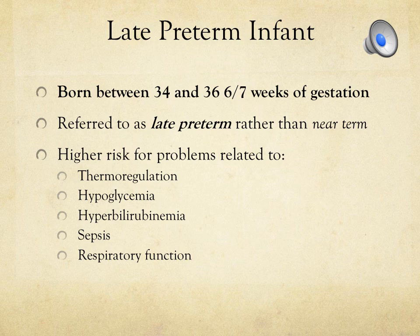For infants born in this gestational age range, assess respirations closely because our babies are respiratory driven. Listen for grunting — hard or soft — and watch for nasal flaring and intercostal muscle retractions to determine if they're really working to breathe. Observe for jaundice in the first 24 hours and review maternal-fetal history for additional risk factors like hemolytic anemia or isoimmunization. Late preterm infants account for about 70% of the total preterm infant population.